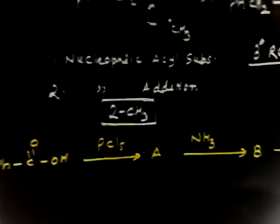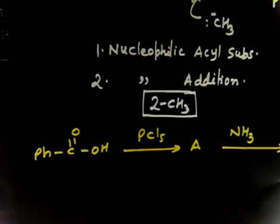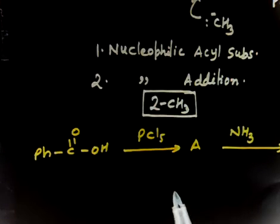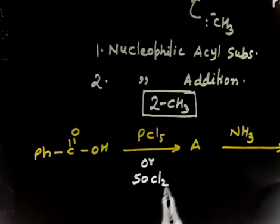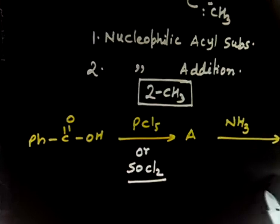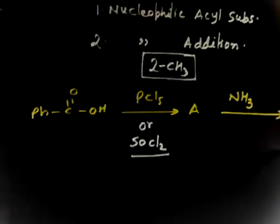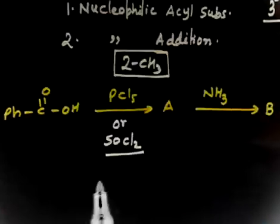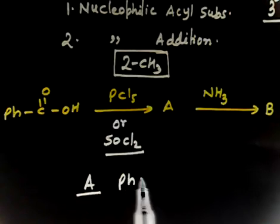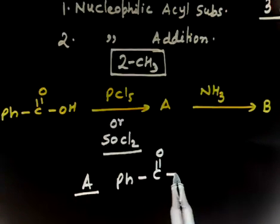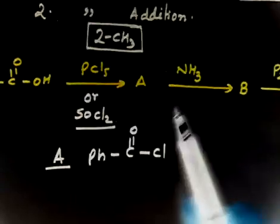You have an acid treated with PCl5. Acid to acid chloride - there are two ways to prepare: one way to use SOCl2, the other PCl5. This is the same. What will happen is it will be converted into acid chloride. So A is Ph-COCl. Next step NH3, so this NH3 will act as a nucleophile.